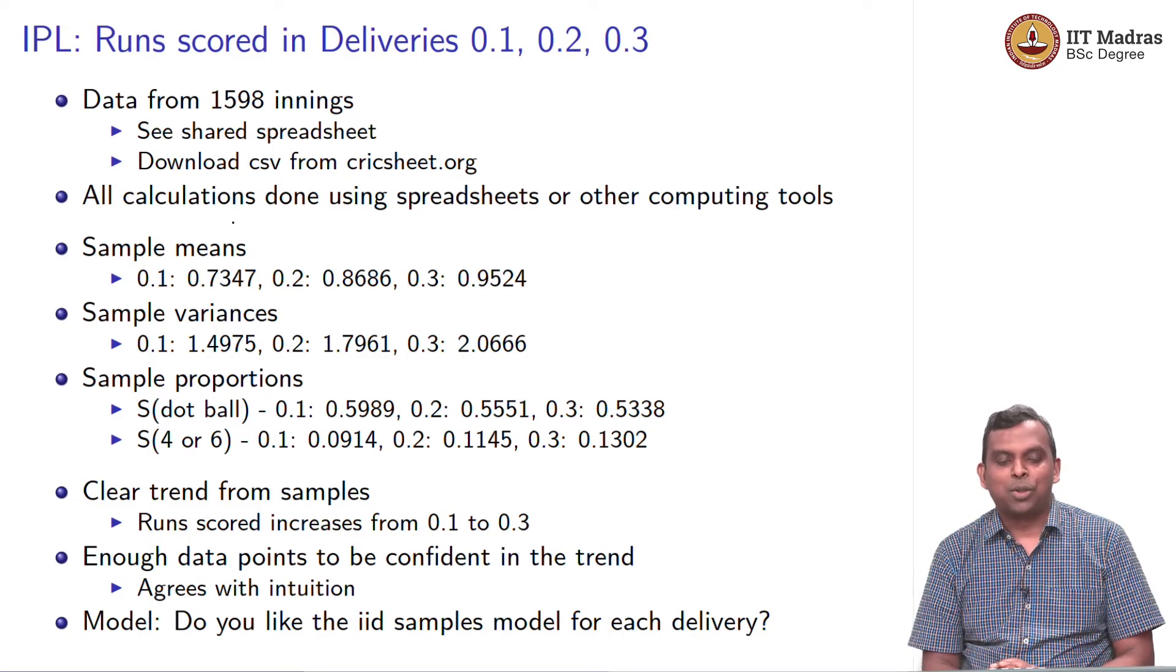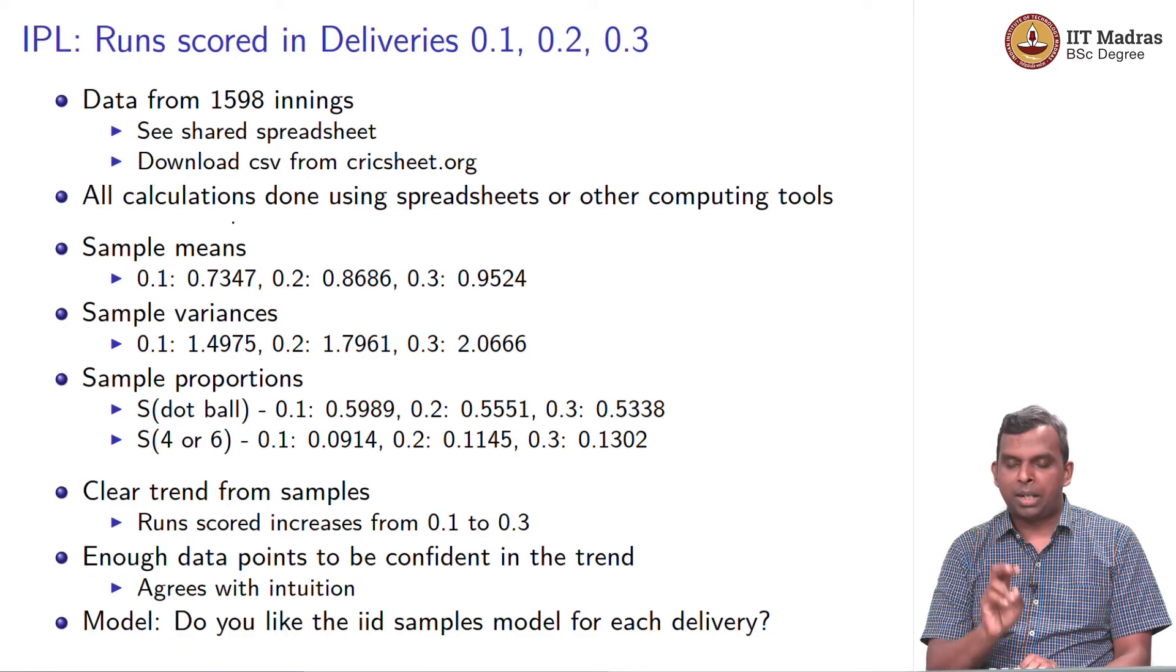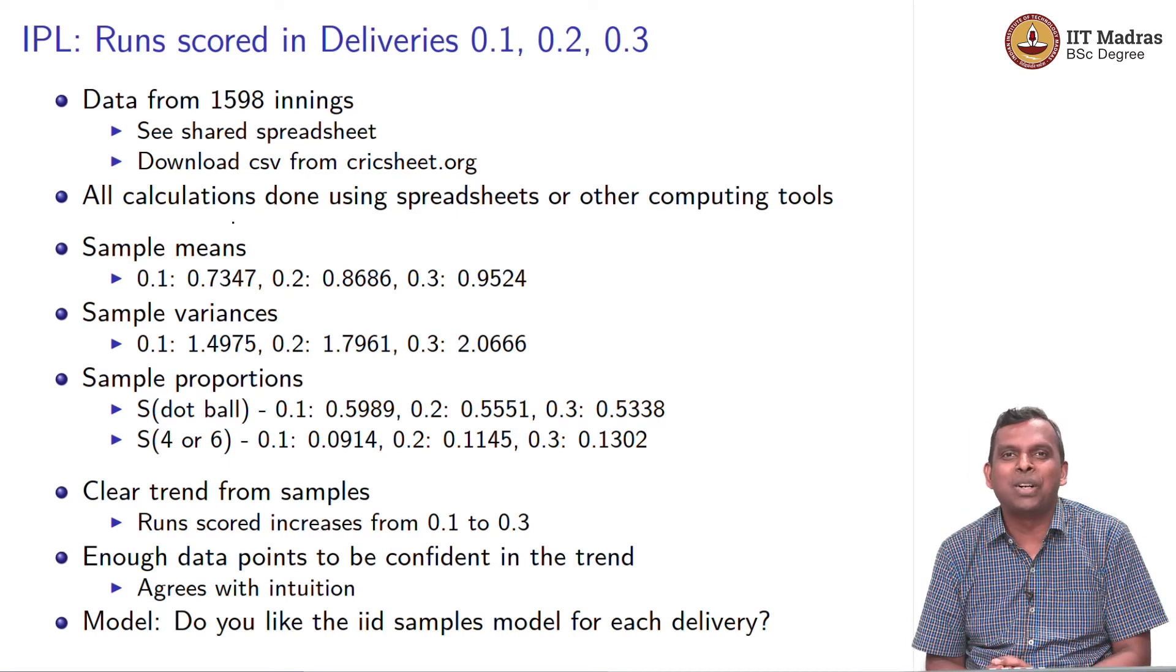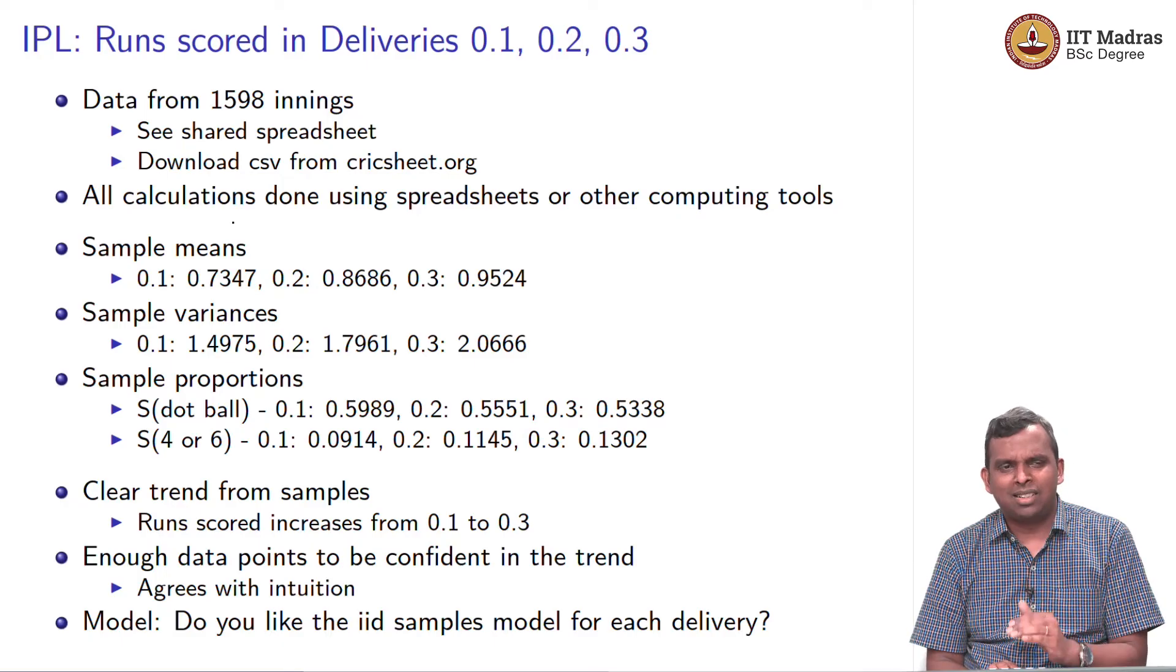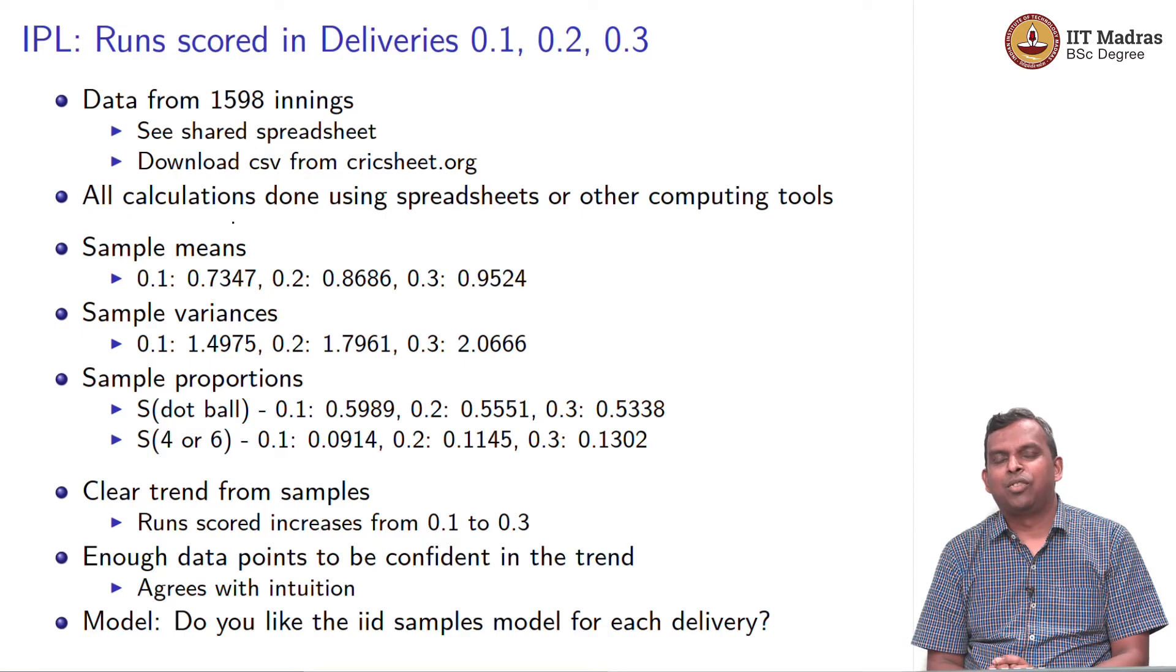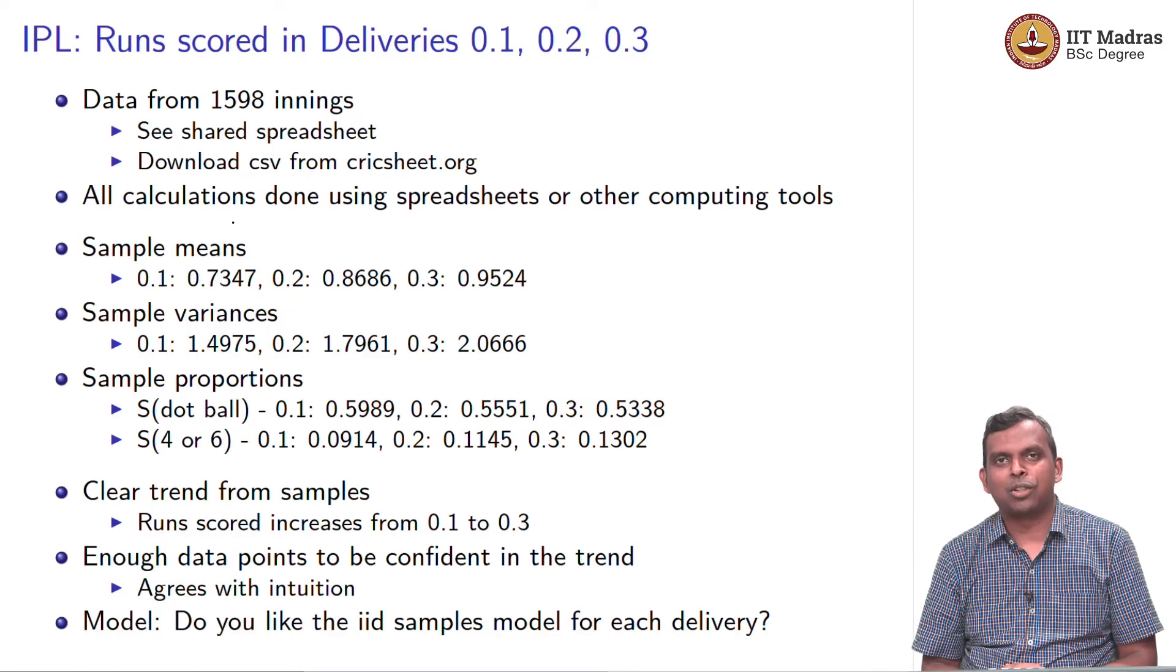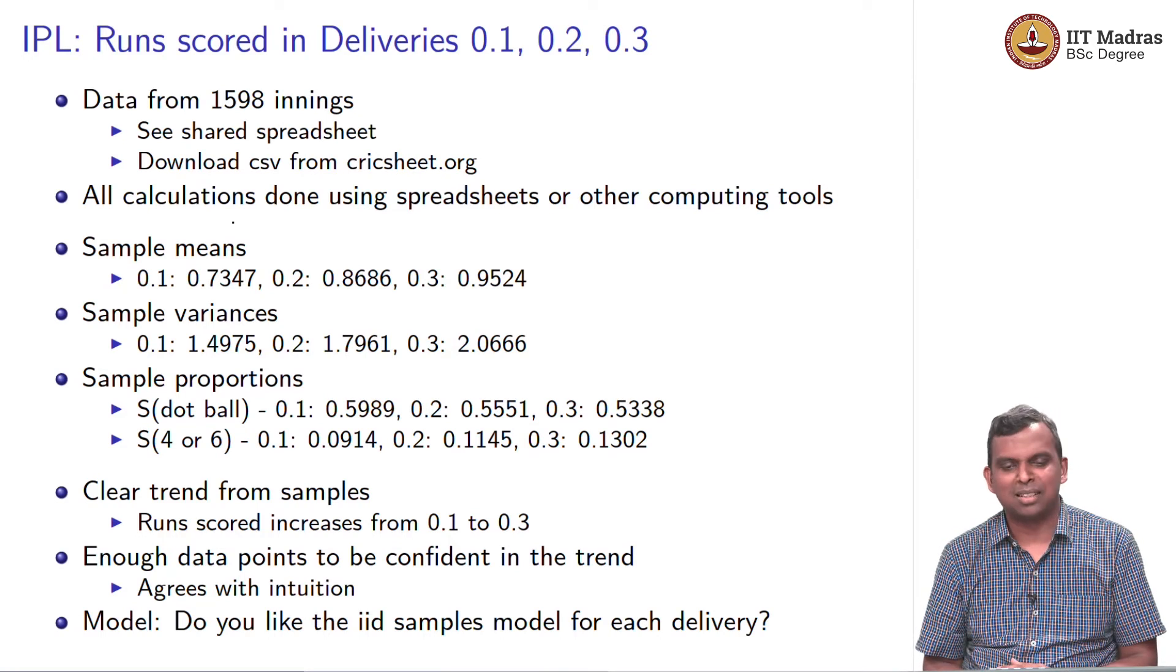But still, look at that question. Do you like the IID samples model? Do you think every delivery that is bowled by one particular bowler in the first over of an IPL innings is independent and identically distributed? Is it a good enough model? Maybe, or needs some additional checks to check this. Maybe later on, we will see if we can do this. It is not a bad model. It looks okay. First three deliveries of the bowl. I think it is okay. It is not too bad. If you get hit for a four or a six in the first ball, maybe it becomes a bit different. But in most cases, I would say first over, even if you get hit for a four for the first ball, most bowlers are going to bowl in the same plan, the plan that they would have had before they came into the match. So it seems reasonable.